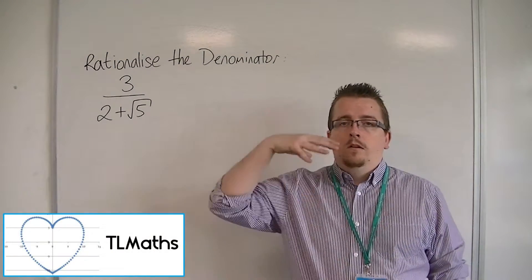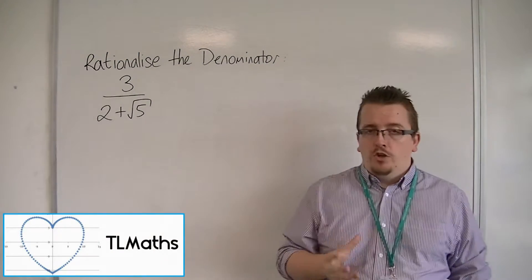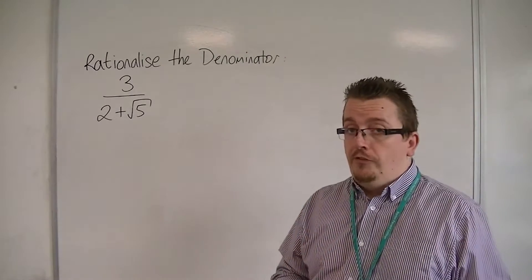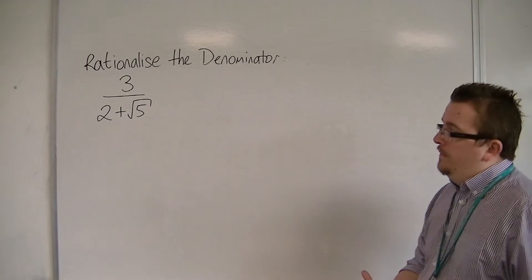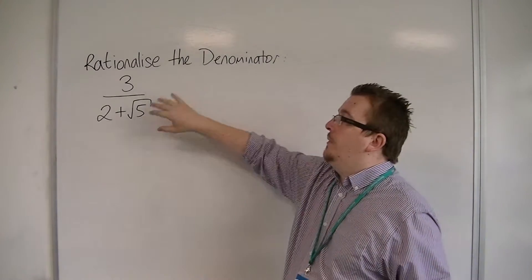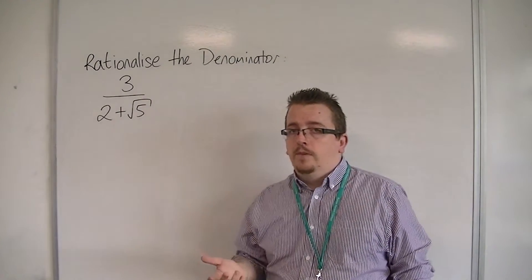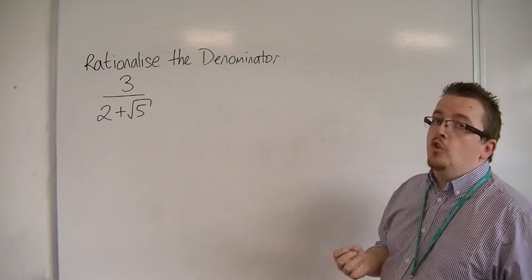So we've seen simple examples of rationalizing the denominator, we've been introduced to that. If we move on to having to rationalize the denominator for something that looks like this, this is a little bit more challenging.